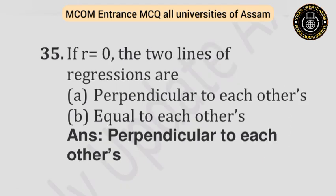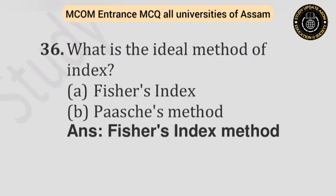Question number thirty-five: If r equals zero, the two lines of regression are — Option A: Perpendicular to each other. Option B: Equal to each other. Answer is perpendicular to each other. Question number thirty-six: What is the ideal method of index numbers? Option A: Fisher's index. Option B: Paasche's index method. Answer is Fischer's index method.